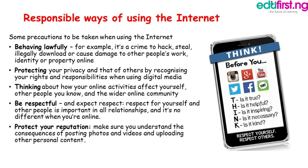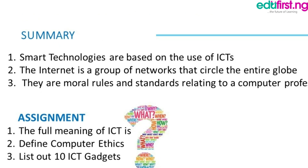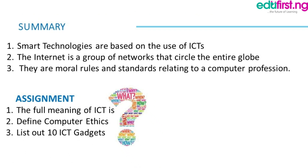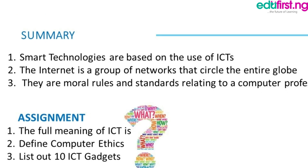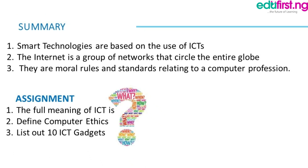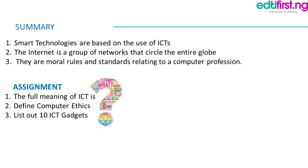Now, let's do a recap of what we have done. The internet is a network of interconnected computers sharing resources together across the globe. Smart technologies are based on the use of ICTs. There are different ICTs, as we have said. ICTs can be used for storing, processing, gathering, and distributing information, for timing and control, and for communication. There are also moral rules and standards relating to the computer profession, so we need to understand all of this.